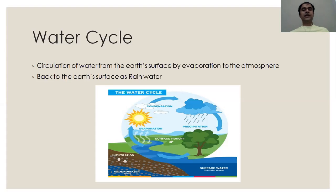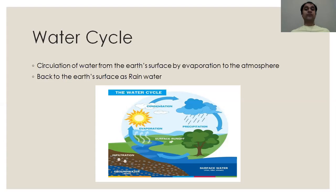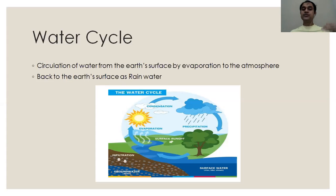One point to add here: when rainwater comes down, there are many pollutants present in the atmosphere, for example CO2 — carbon dioxide. When carbon dioxide mixes with water, H2O + CO2 gives us H2CO3, which is carbonic acid. But that is not a part of the water cycle. Though rainwater combines with carbon dioxide and becomes acidic because of H2CO3, when it is evaporated, it will not evaporate as H2CO3 but only as H2O — that is why it is also called natural distillation.